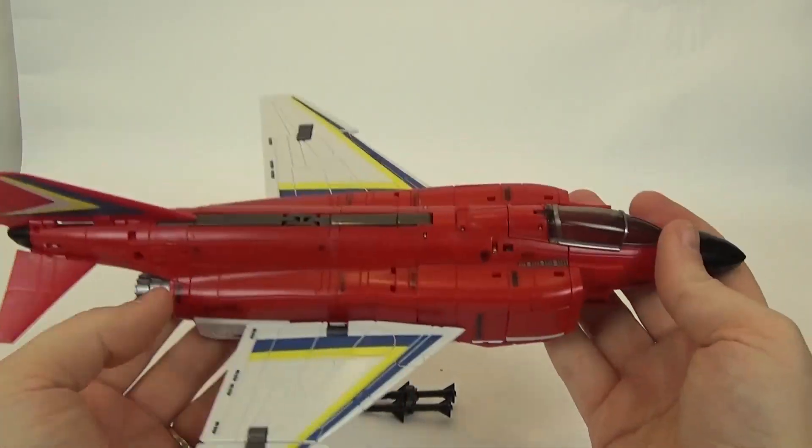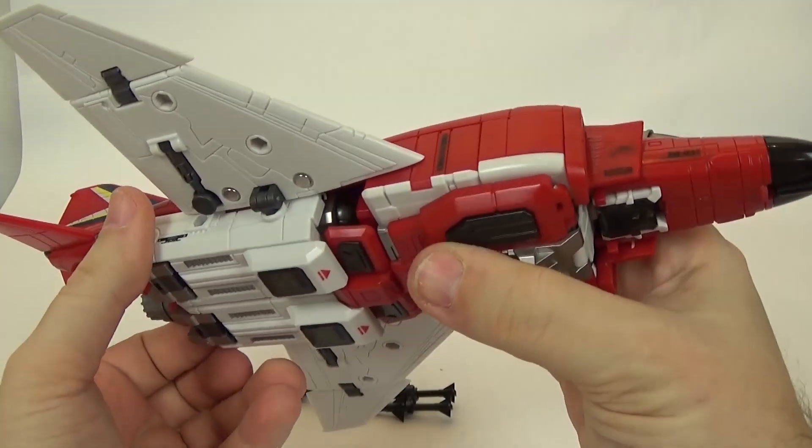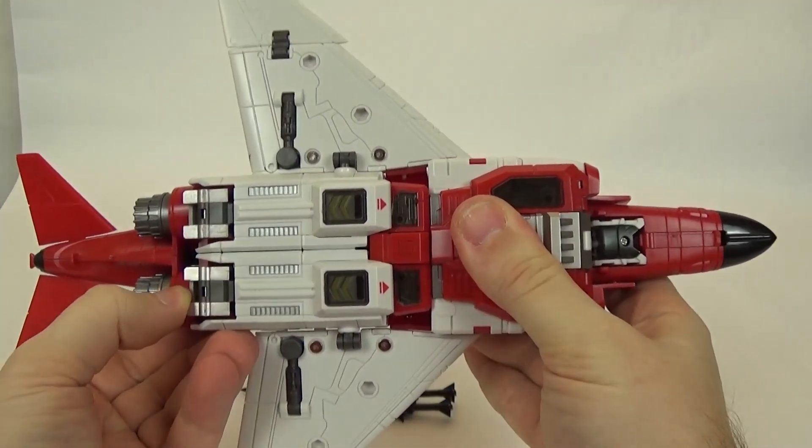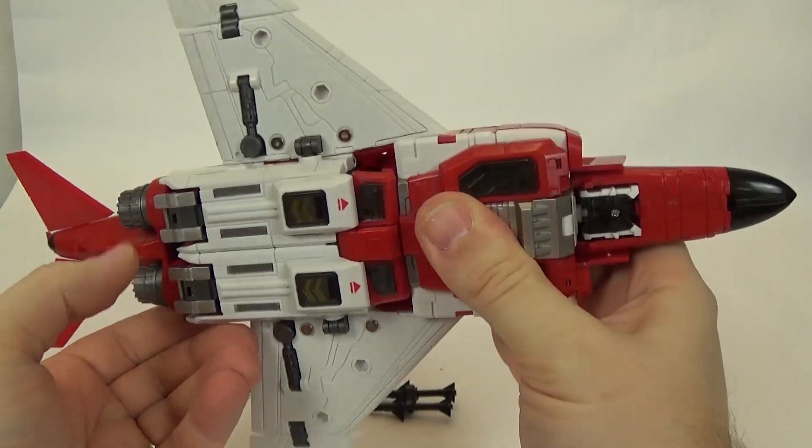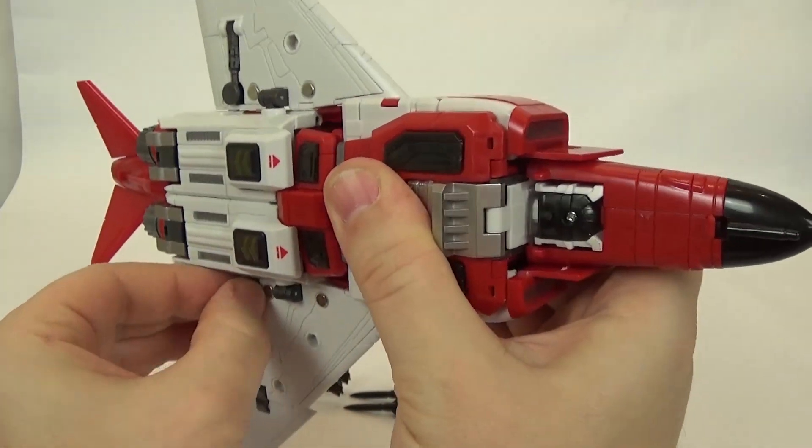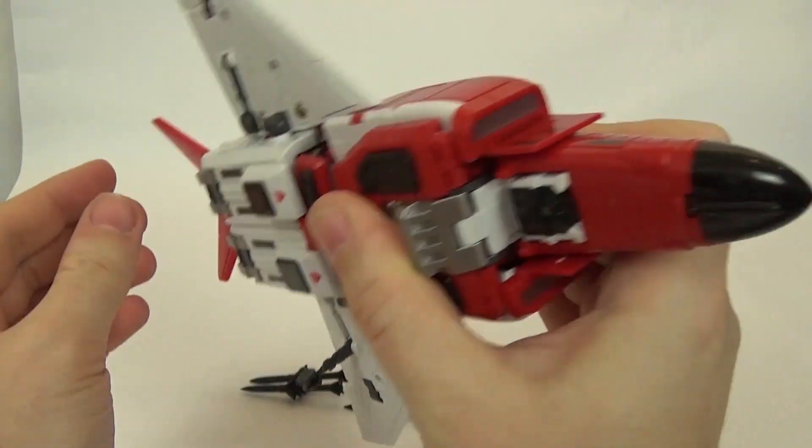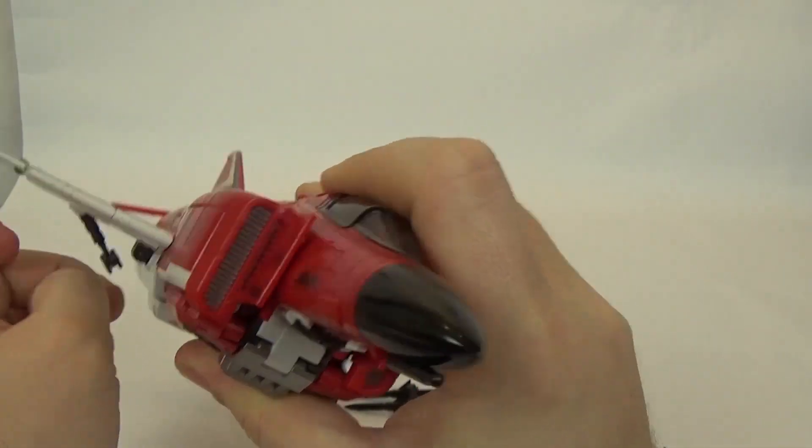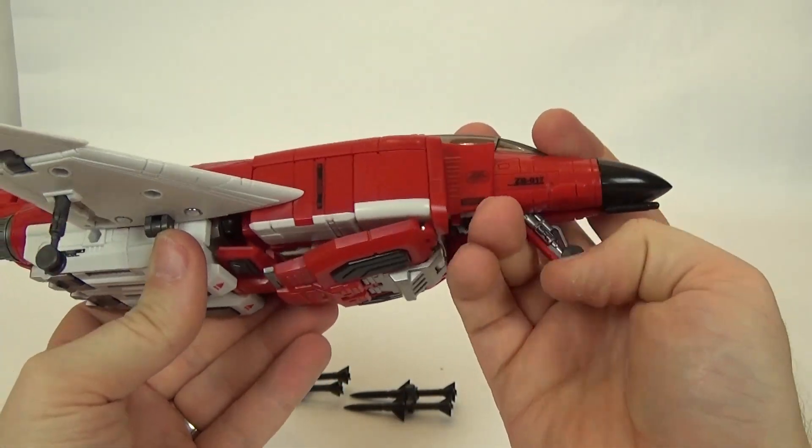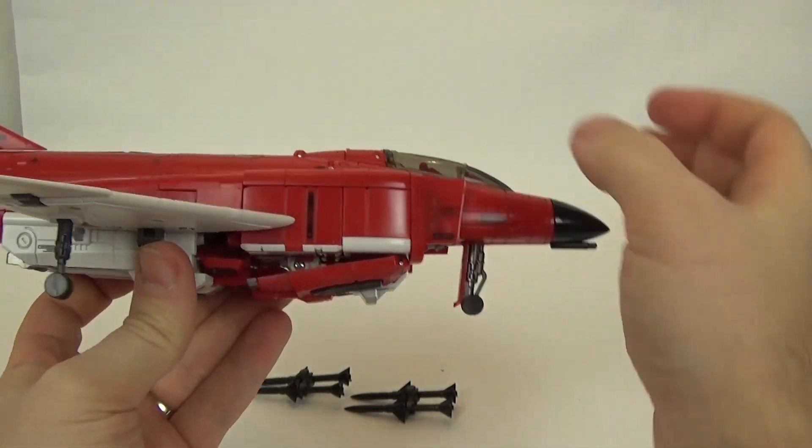Which looks very good. I must say, if this would actually stay closed like it was supposed to, it would look even better. You do have landing gear on this that you can flip out. There's one on each wing. And, then one on the front of the jet.